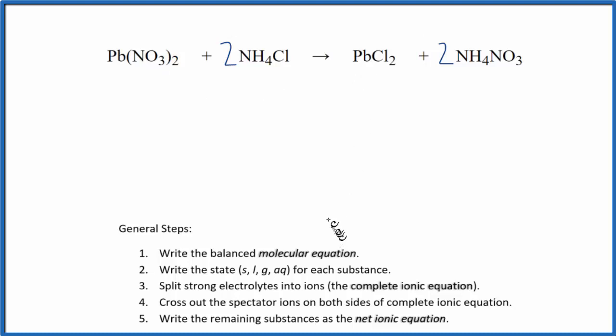After that, we need to write the state for each substance. Nitrates are very soluble, so I'm going to write AQ for aqueous. That's going to dissolve and dissociate into its ions. Ammonium compounds and chloride compounds as well are very soluble. We'll write AQ.